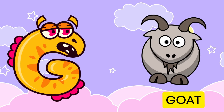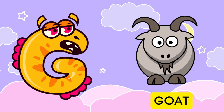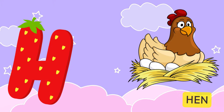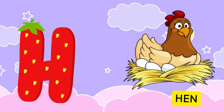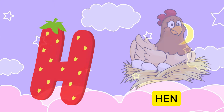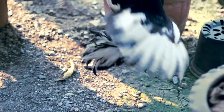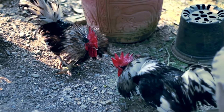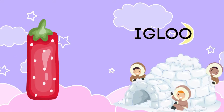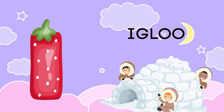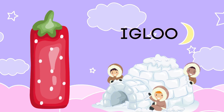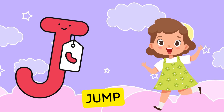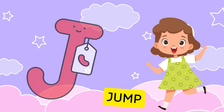G is for goat, g-g-goat. H is for hand, h-h-hand. I is for igloo, i-i-igloo. J is for jump, j-j-jump.